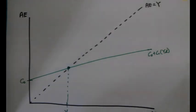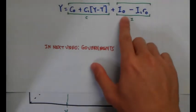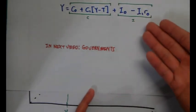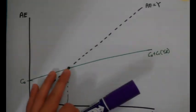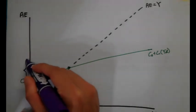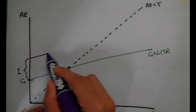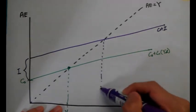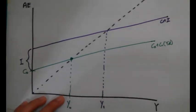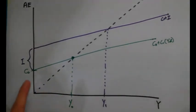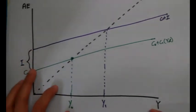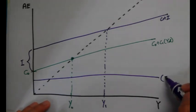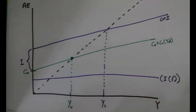Now let me add investment into the picture. Investment is I-naught minus I₁ times r, at a given interest rate r-naught. Since there is no Y variable in this expression, investment becomes a fixed component in the graph. So we shift the AE curve upward by the amount of investment. This gives us the C plus I curve — with more spending, the economy reaches a higher level of equilibrium output. The vertical distance added represents I, the level of investment at the given interest rate.